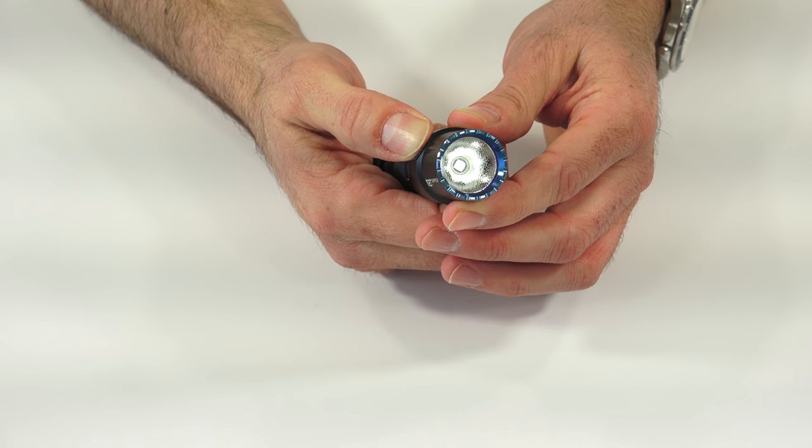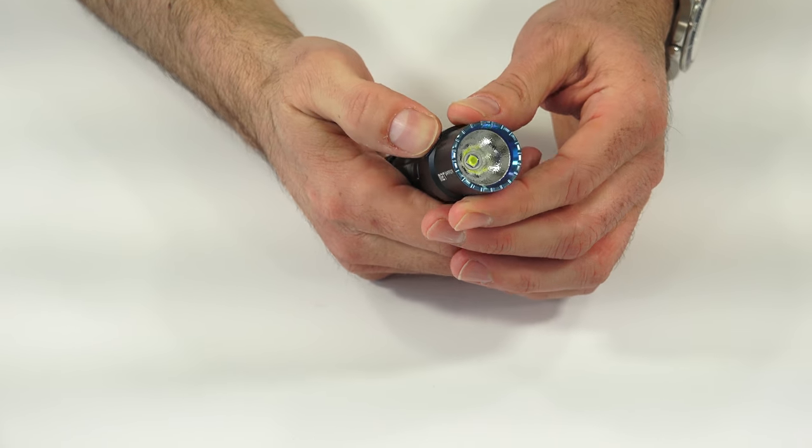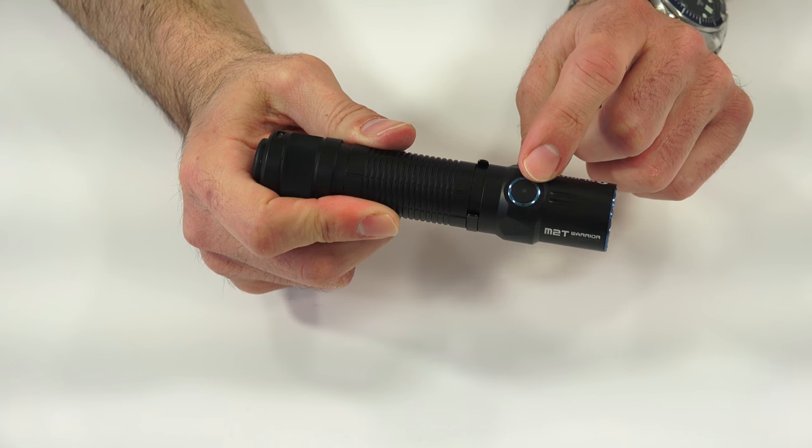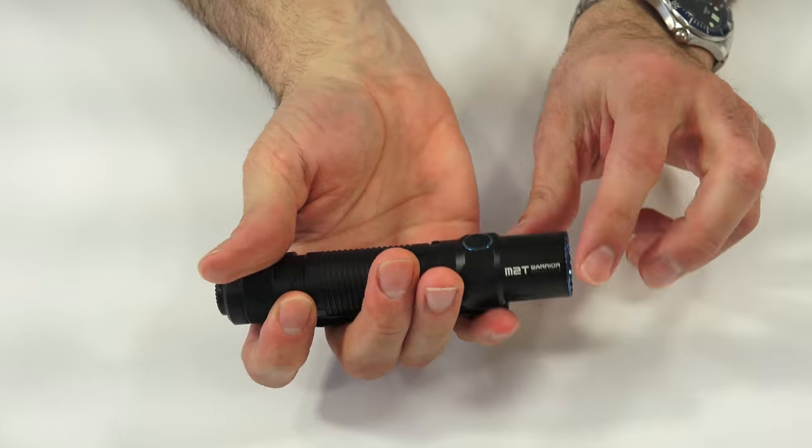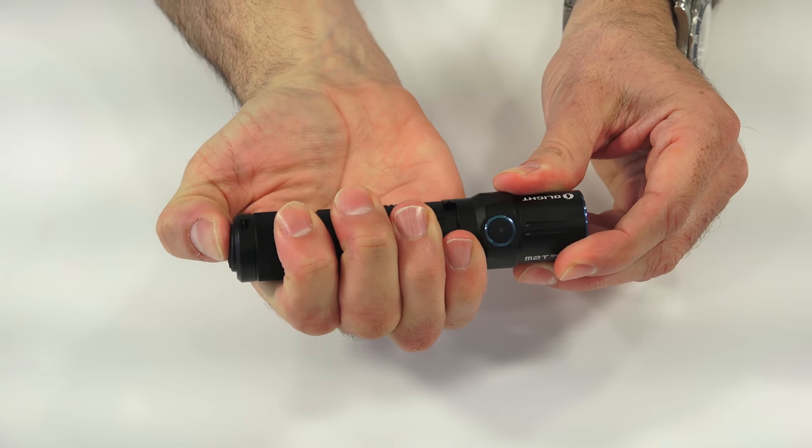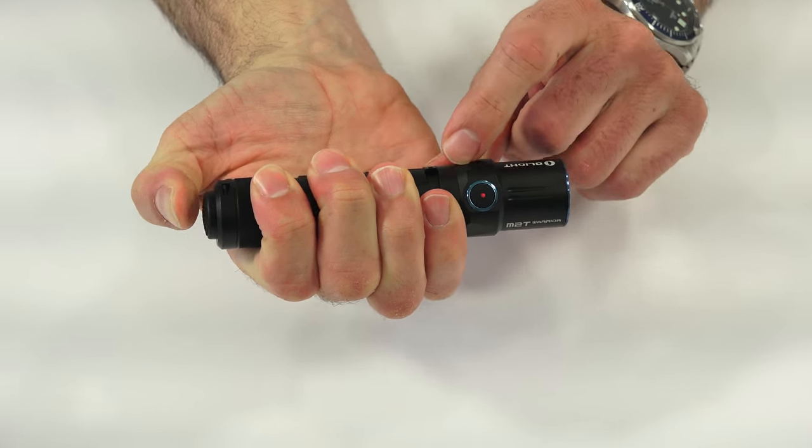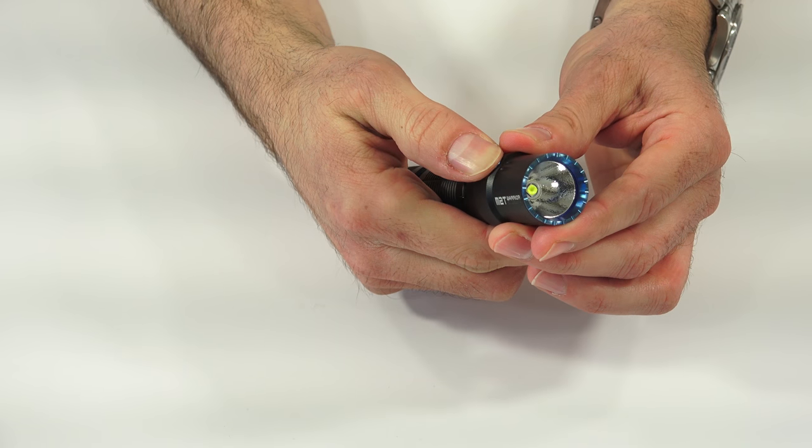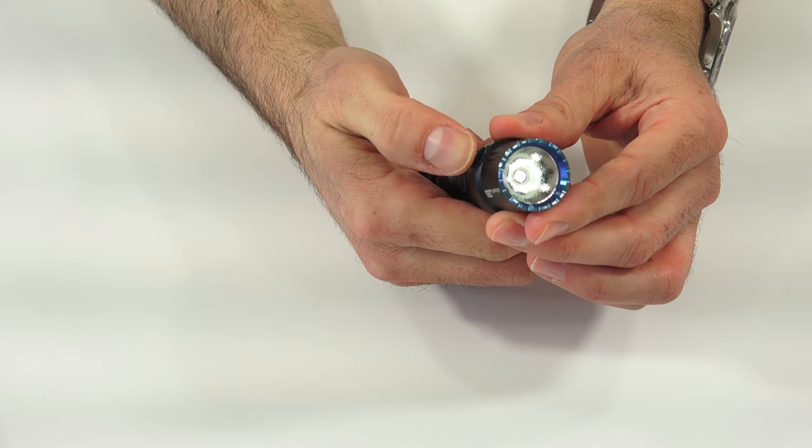It also has a lockout. If you hold it down, it will come on and go back off, and then the light will not turn on. When you try and turn it on, the little side button here will light up red to show you that it is locked out. That locks out both the tail switch and the side switch. To get it out of the lockout, you just hold it down again, the light will come back onto the moonlight mode.